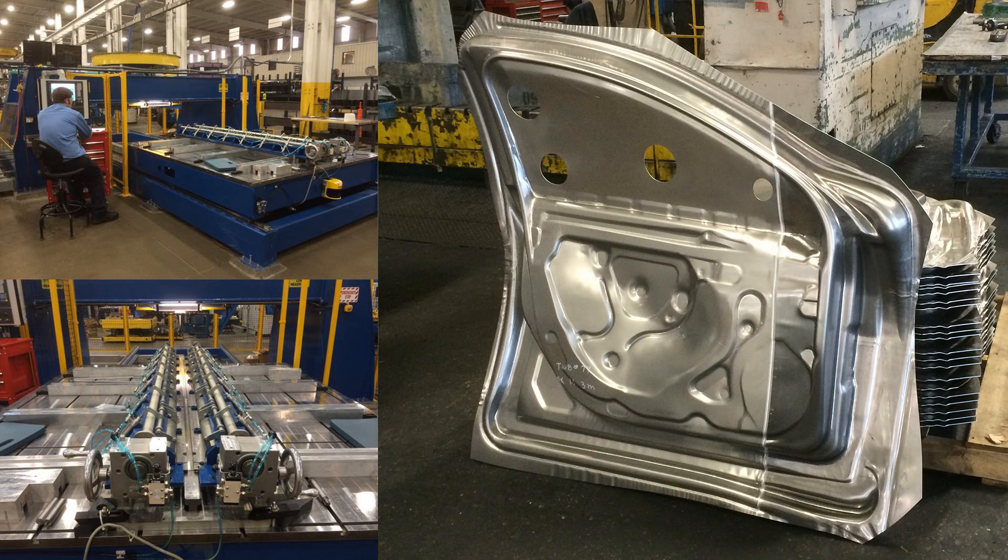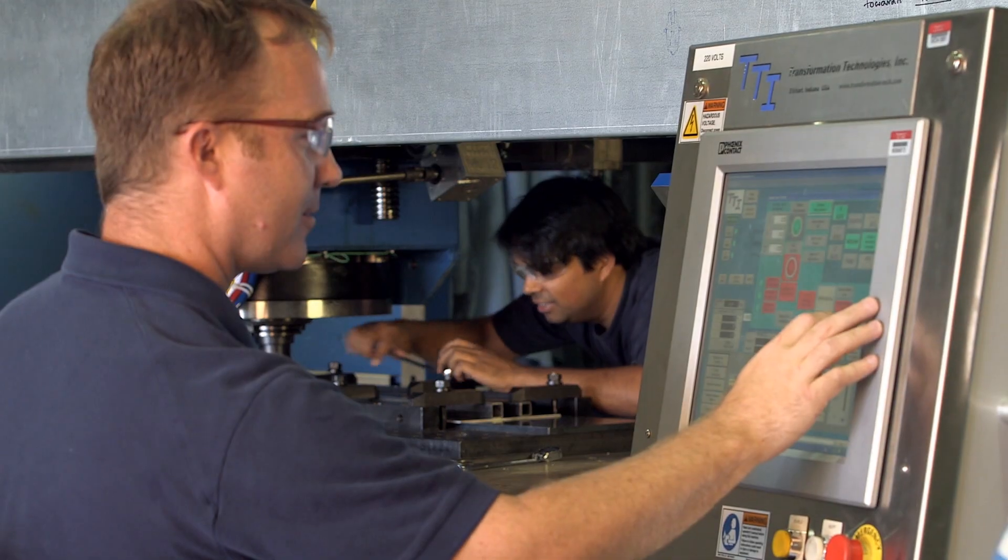By working directly with Taylor welded blank company, they were able to put in their facilities in Monroe, Michigan, a dedicated friction stir welding machine that's capable of producing up to 250,000 blanks a year. This is a first for the automotive industry.